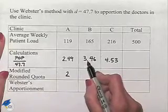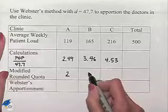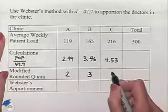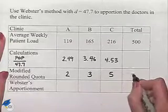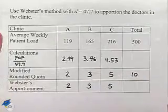For clinic B, we're going to take the 0.46 and see that we have to round down to give us 3. And for clinic C, we're going to round up to give us 5. And so we see that our total is 10, which gives us the correct apportionment.